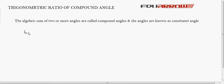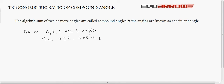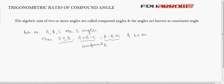For example, if A, B, C are angles, then A plus B, A minus B, A plus B minus C, and so on are all compound angles. The resultant of such expressions is known as a compound angle.